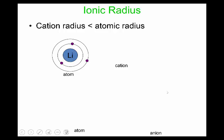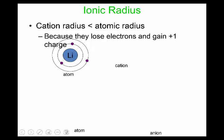A cation radius — this is when we lose an electron — is smaller than the regular atom's atomic radius. The reason is because you lose electrons, so you actually end up losing a whole shell sometimes, and the next closest shell is a whole energy level closer, so the radius gets a lot smaller. The other reason is you gain a plus one charge on the cation, which will attract the electrons even more than its regular atom counterpart.